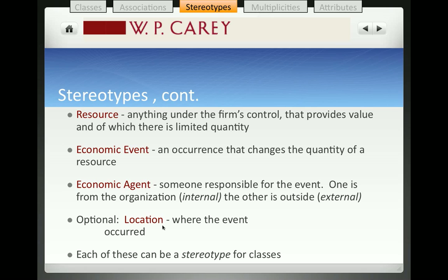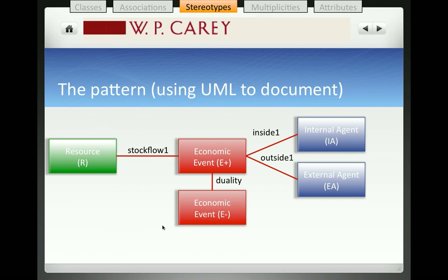There are agents that participate in business, and in the REA template we recognize a difference between the internal agents — those who are working on behalf of the company being modeled — and the external agents, or the trading partners with whom we're in business. You could also have location as an optional stereotypical class that occurs in business, although we won't include it in this example. Each of these resources, events, and agents can be represented as a stereotype to enhance the readability of the UML diagram.